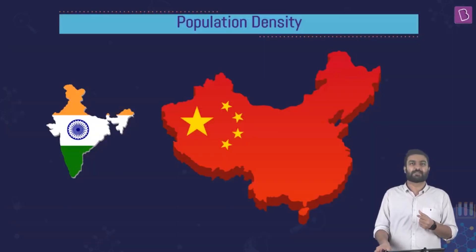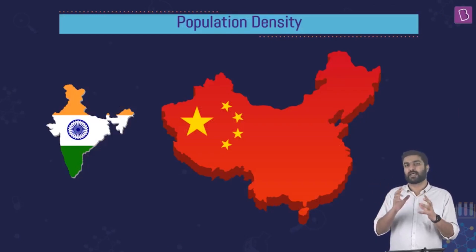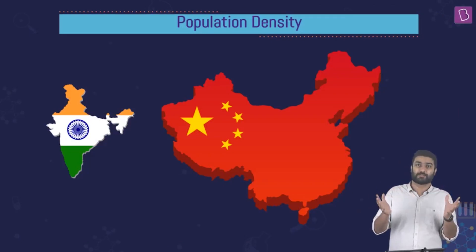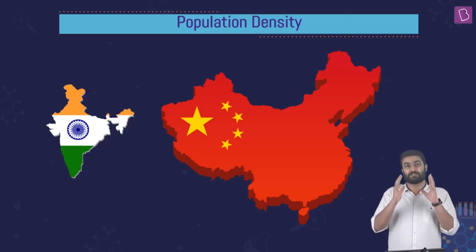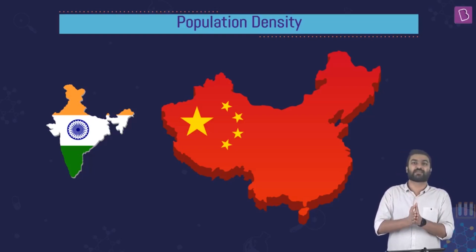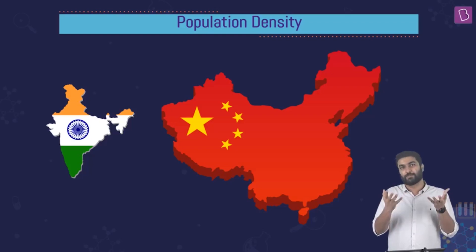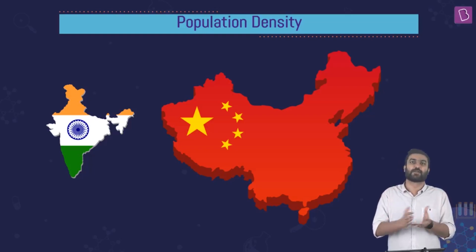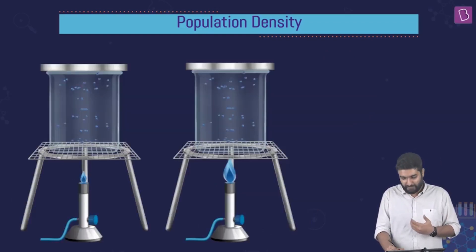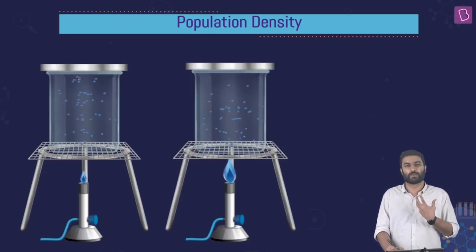Now we consider two countries with similar populations, but where the land area of one is much larger than the other. As you can see, the two maps are drawn to scale — China is a lot bigger in terms of land area compared to India. But the population of the two countries is quite similar. Because the land area of India is relatively small, the population density of India turns out to be more than that of China.